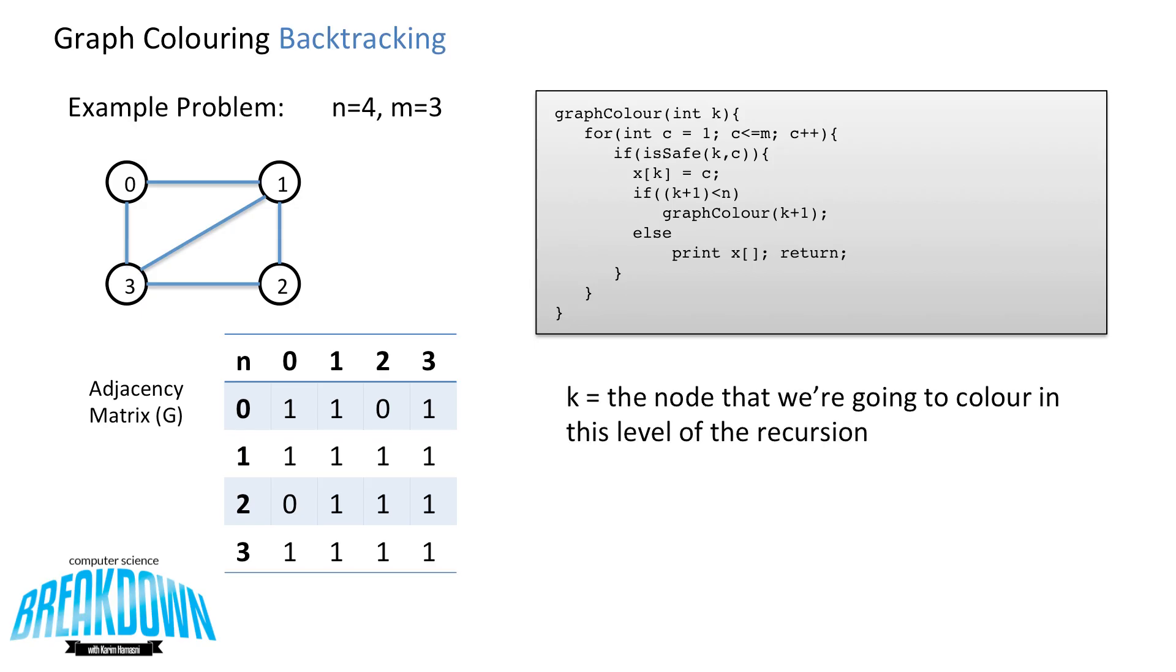So K in this case is the node that we're going to color in this level of the recursion. And XK is an array that holds the current color at each node.